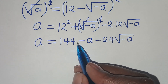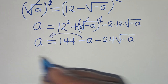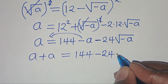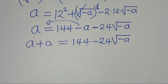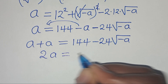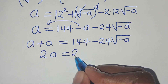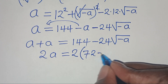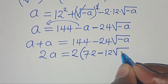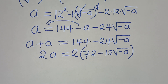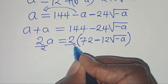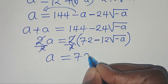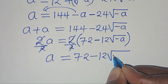The next step: we have a plus a equals 144 minus 24√(-a), so 2a = 144 - 24√(-a). We can factor out 2, dividing both sides by 2: a = 72 - 12√(-a).